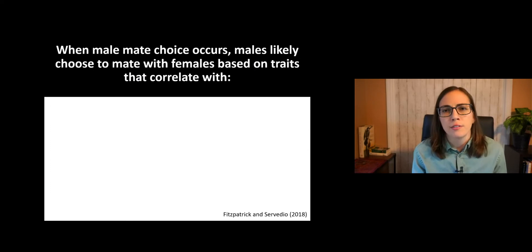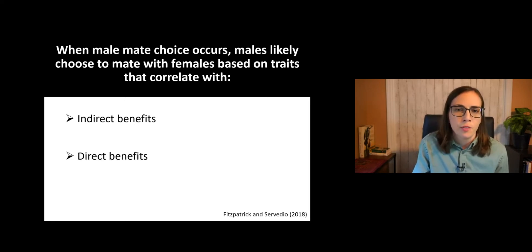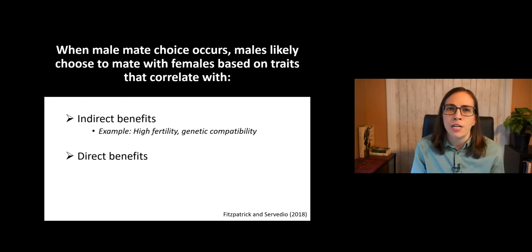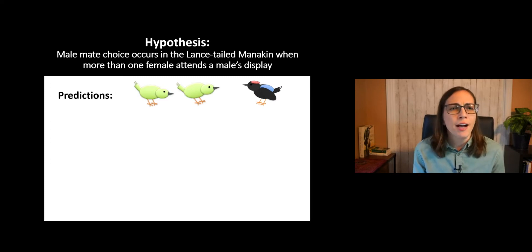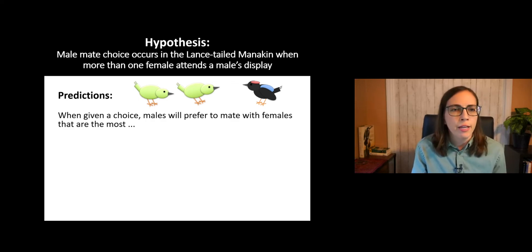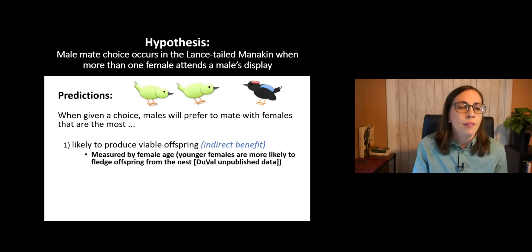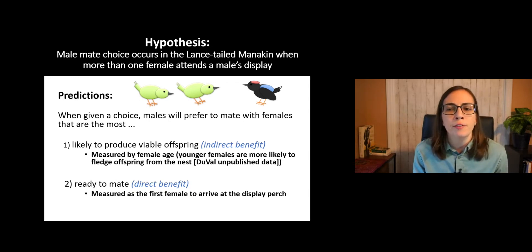So when male mate choice occurs, males likely choose to mate with females based on traits that correlate with either indirect benefits to the male or direct benefits to the male. So indirect benefits would be things like high fertility or genetic compatibility for producing viable offspring. Or for direct benefits to the male, these would be things like virginity, lack of infection, and readiness to mate, as that means that the male doesn't have to expend quite as much energy on a not-ready female. So we sought to test the hypothesis that male mate choice occurs in the lance-tailed manakin when more than one female attends a male's display. We made two predictions. Our first was that when given a choice, males will prefer to mate with females that are the most likely to produce viable offspring. In our species, we measured this by female age, as younger females are more likely to fledge offspring from the nest. We also made the prediction that males would prefer to mate with females that are the most ready to mate, which we measured as the first female to arrive at the display perch.